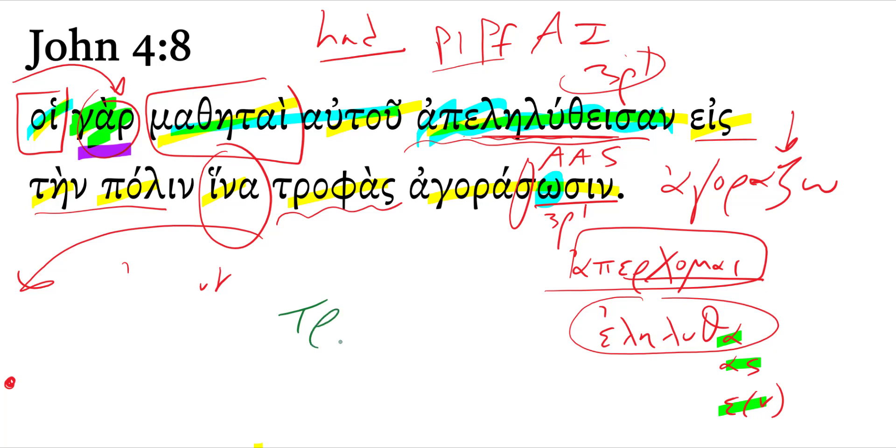The singular form is trafe, right? He trafe, food. So this is the accusative plural, so that they might buy, so that they could buy, or would buy, supplies.